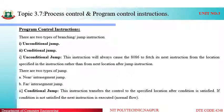An unconditional jump instruction will always cause the 8086 to fetch its new instruction from the location specified in the instruction, rather than from the next location after the jump instruction. There are two types: near jump, also called intra-segment jump — jumping within the same segment — and far jump, also called inter-segment jump — jumping from one segment of memory to another segment of memory.